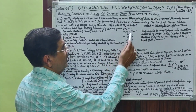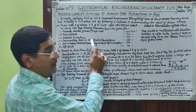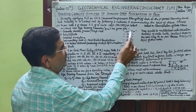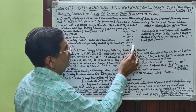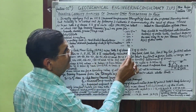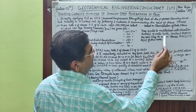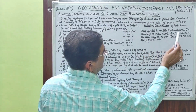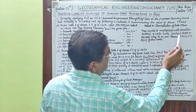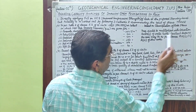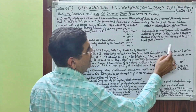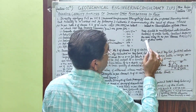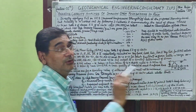We identify the rock bracket concerned and find the corresponding bearing capacity from the chart. Then we apply correction factors for water table, cavities, and slope, which have been defined in Clause 9.2.1, 9.2.2, and 9.3 respectively of this code.